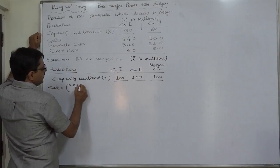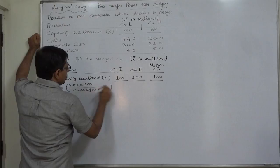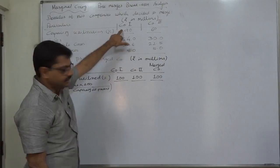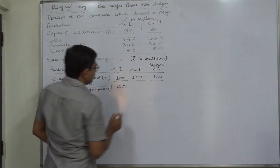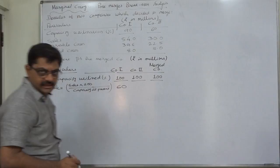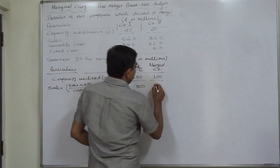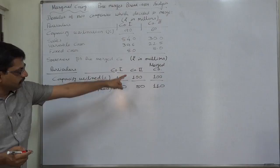That will be: sales × 100 ÷ capacity at present. For example, 54 million sales is at 90% capacity, so 54 × 100 ÷ 90 gives 60 million — the 100% capacity sales of the first company. Similarly, 30 million sales of the second company is at 60% capacity utilization: 30 × 100 ÷ 60 = 50 million. So 60 plus 50 = 110 million sales will be the 100% or full capacity of the new merged company.